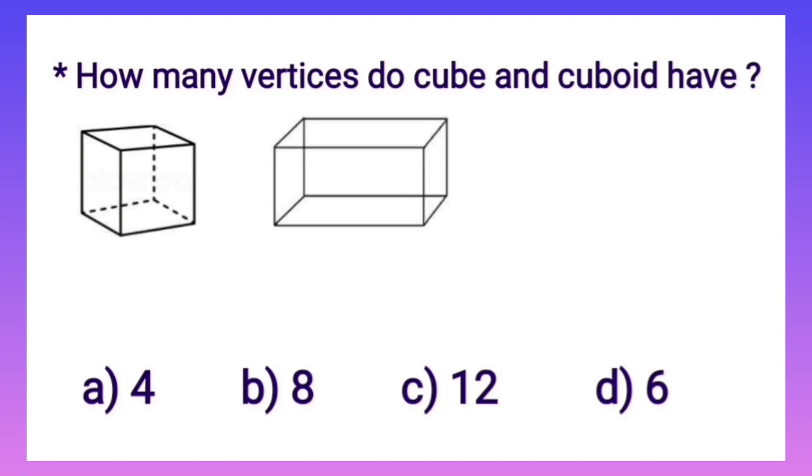One, two, three, four, five, six, seven, and eight. So children, the total number of vertices is eight. Is it option A? This is four, no. Option B, eight - this is the correct one. Let's put a tick here.